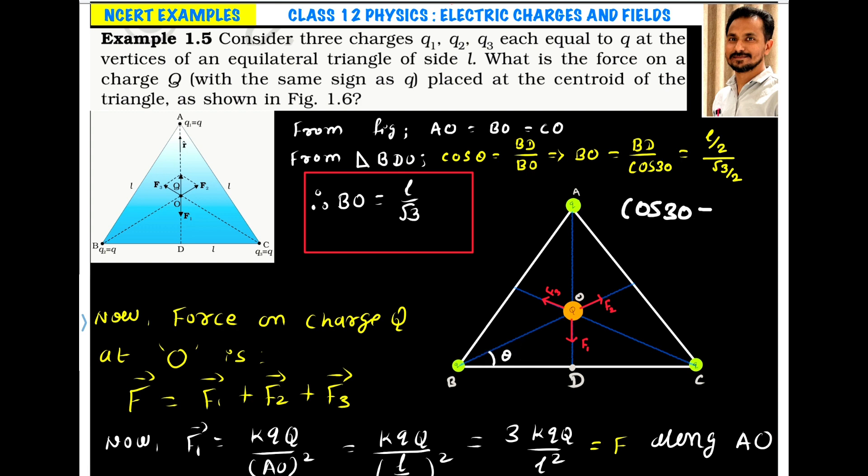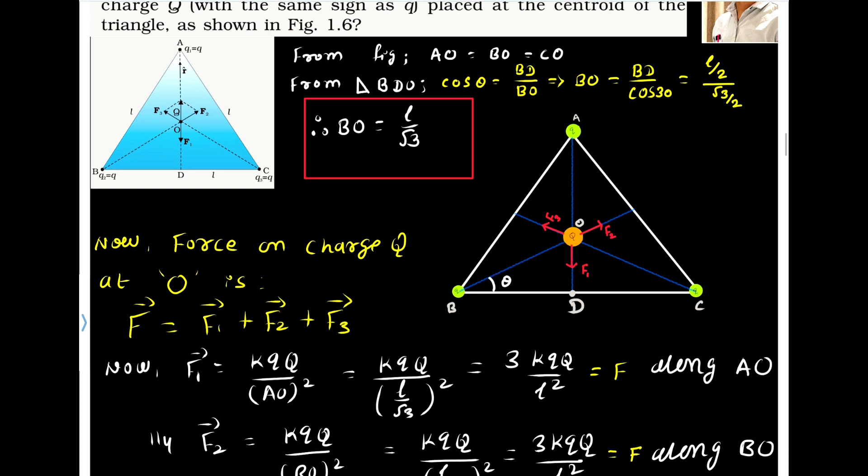So cos theta, so cos 30 is equals to adjacent by hypotenuse. So what is adjacent here? BD. What is hypo here? BO or OB. So if you make BO as a subject, then BO is equals to BD by cos 30. Now BD is L by 2 and cos 30 is root 3 by 2, 2 to cancel. So the length of this OB or BO is L by root 3. So all are equal. So here L by root 3.